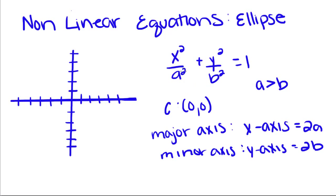So for this equation, we have x squared over a squared plus y squared over b squared equals 1. So for this particular ellipse, we have a center at 0, 0.